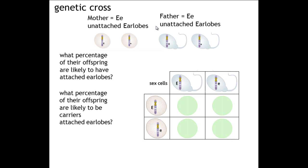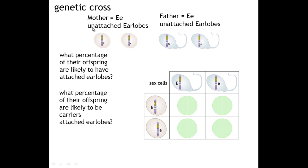There is a specific name for this type of genotype where the two alleles are different, and that is referred to as heterozygous — hetero meaning different. If the two alleles were the same, for example small e, small e, then that would be referred to as homozygous — the same as if they were uppercase E, uppercase E. So heterozygous means different, homozygous means the same.